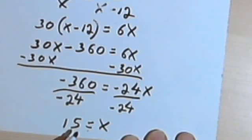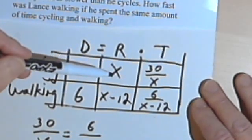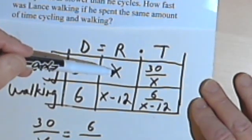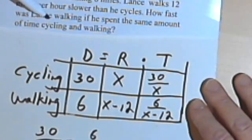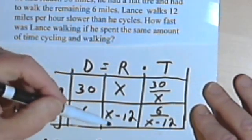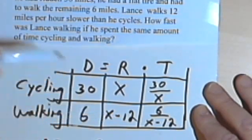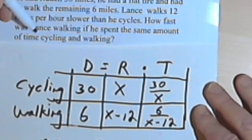Now let's go back to the problem and make sure we're answering the right question. x was the amount of time that he spent cycling, and that's 15. But we're asked to find how much time he spent walking, how fast was he walking. So that's going to be x, or 15 minus 12. So the answer to this problem would be that his walking speed was 3 miles per hour.